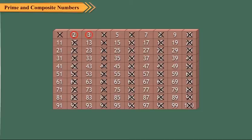3 is also a prime number. Encircle 3. Cross out the multiples of 3 as these are composite numbers. 5 is also a prime number. Encircle 5. Cross out the multiples of 5 as these are composite numbers.